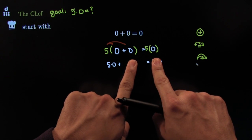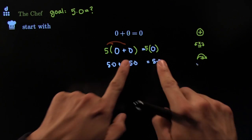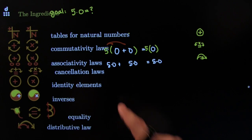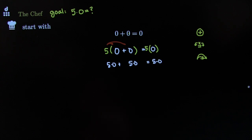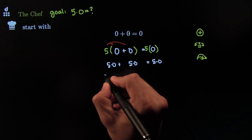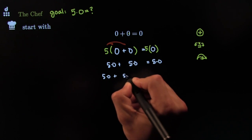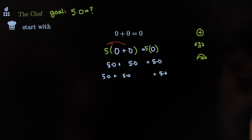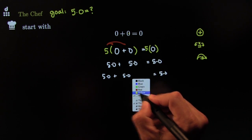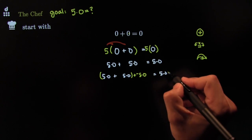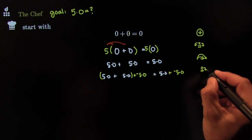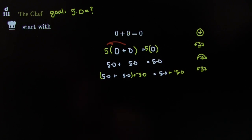I'd ultimately like to know what five times zero is. Maybe I could subtract one of those from both sides — but we can't subtract in this class; we only use the ingredients we have. However, there is one axiom that says we can add things to both sides. So we take: five times zero plus five times zero equals five times zero, and we add negative five times zero to both sides. Negative five times zero is a five-times-zero killer — that's the additive inverse, by the cancellation law of addition.